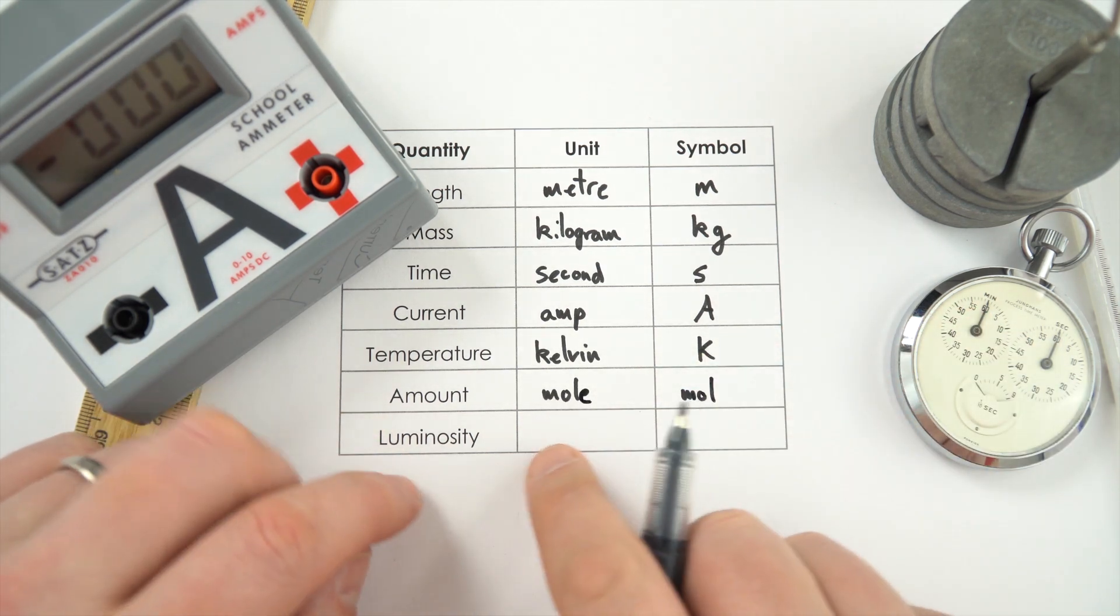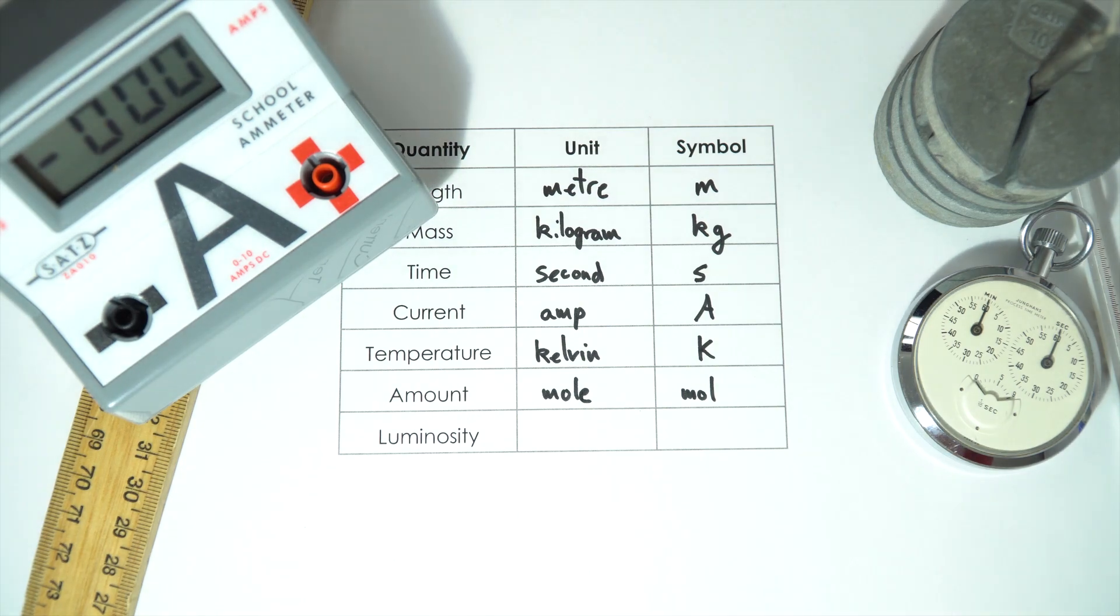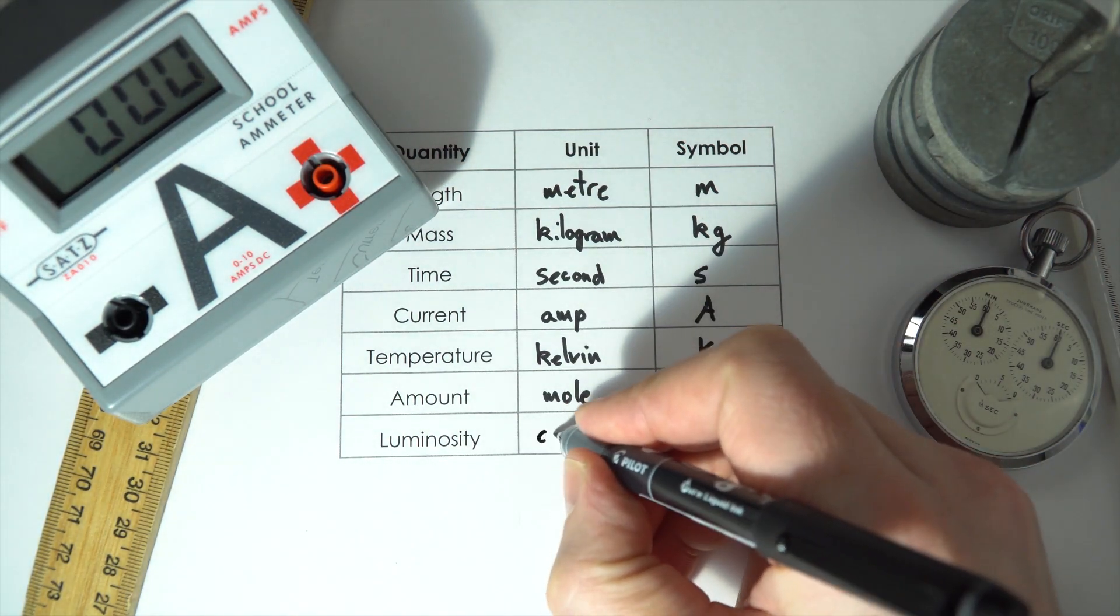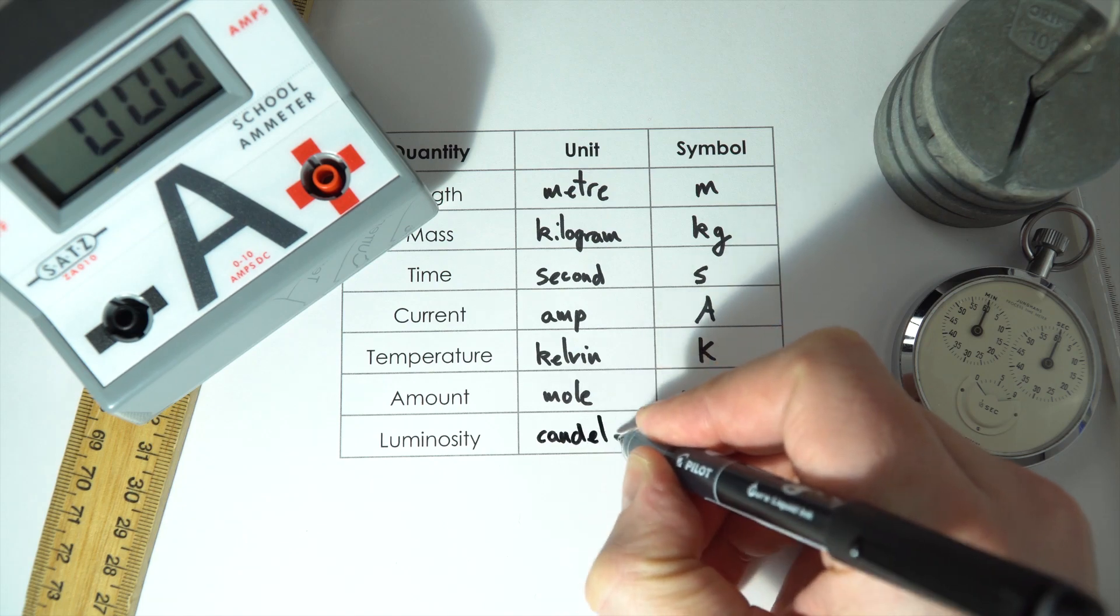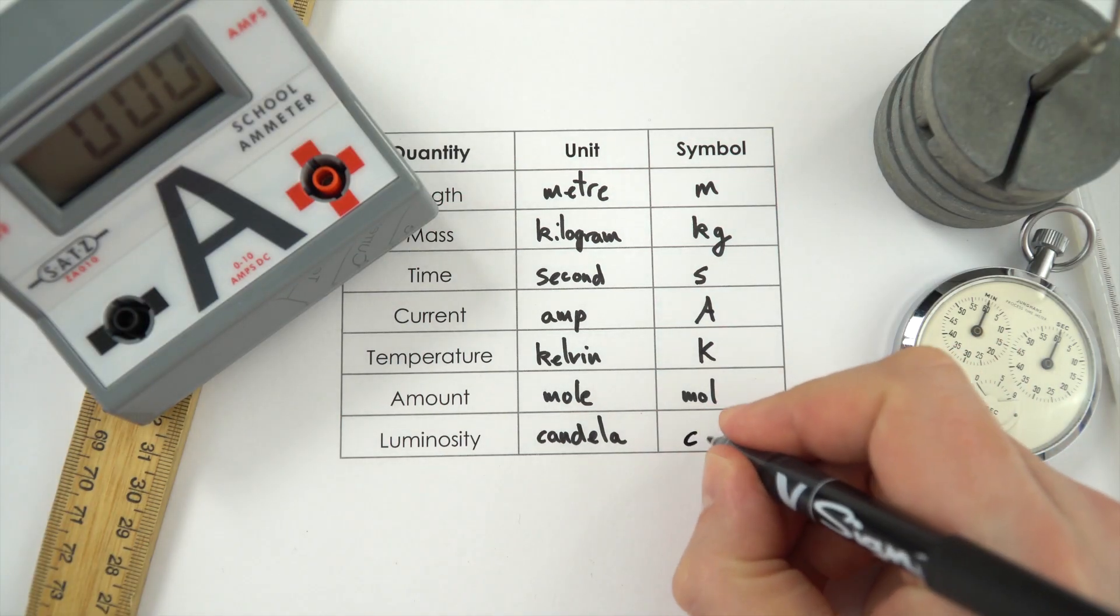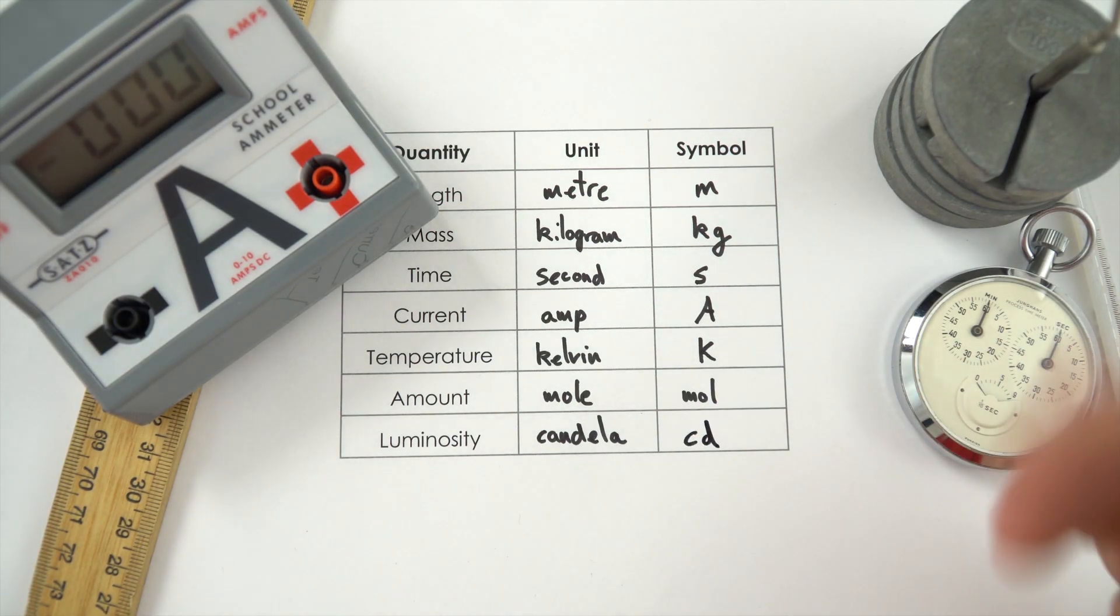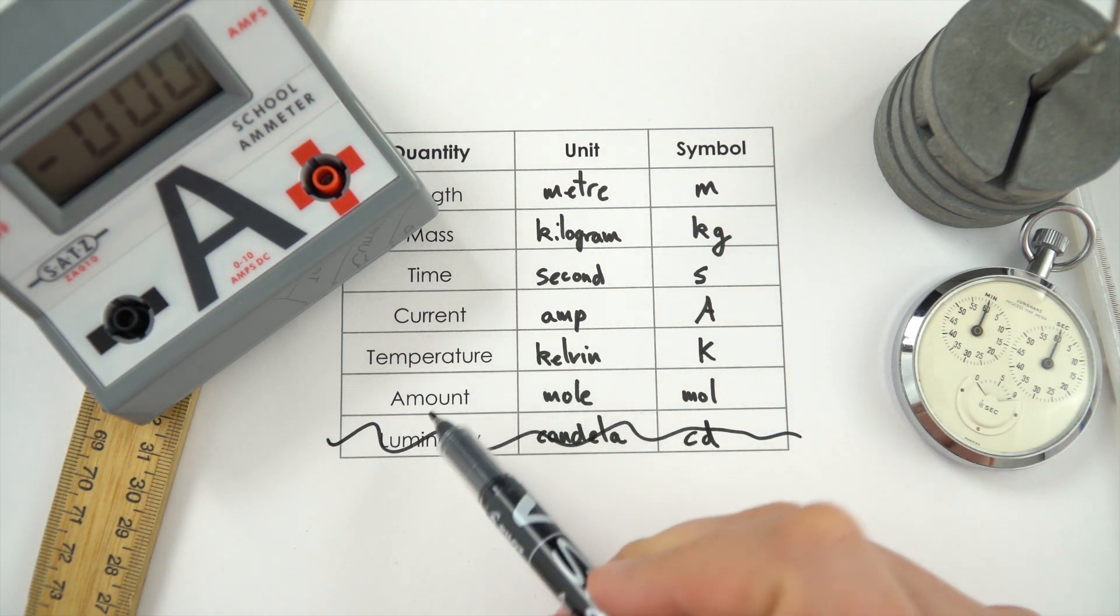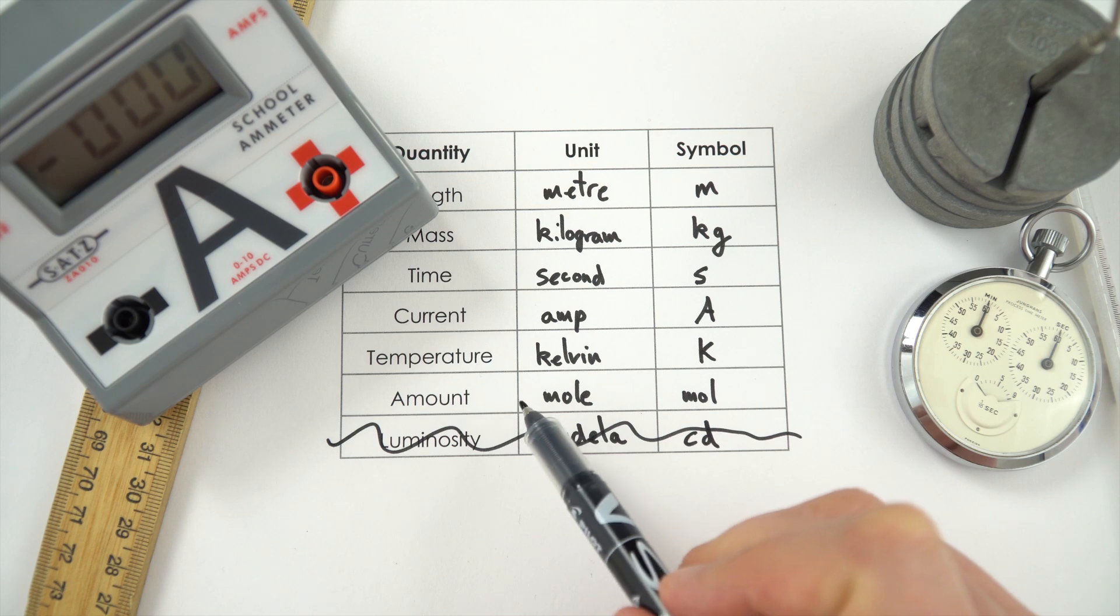And then finally we have luminosity. So luminosity really is a measure of how bright something is. And we use the unit, the candela. And this is shortened to CD. However in GCSE physics we never use that. We don't even use it at A level. We don't really use the amount apart from if we're doing any stuff in chemistry.